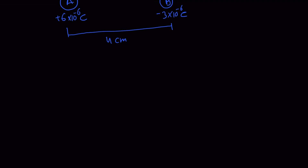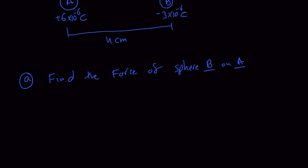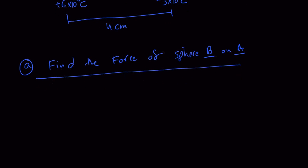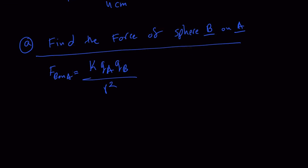For Part A, we need to calculate the force of sphere B on sphere A. This is quite straightforward. We apply Coulomb's law: F of B on A equals k multiplied by the charge of A multiplied by the charge of B, divided by the distance between them squared.